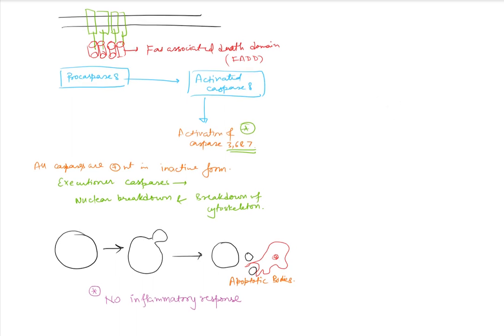To summarize the extrinsic pathway: the FAS ligand attaches to the FAS receptor, causing formation of the death domain. Associated proteins attach, leading to formation of FADD, where pro-caspase is activated into caspase 8, which activates further caspases. The cell forms blebs, apoptotic bodies are formed, they are engulfed by macrophages, and there is no inflammatory response.